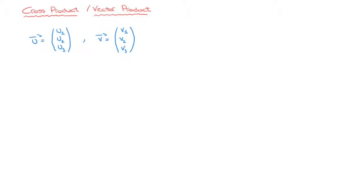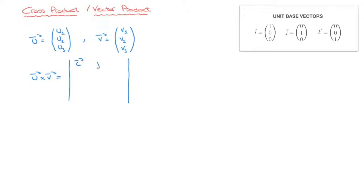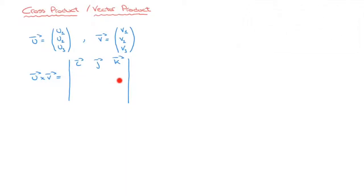The cross-product of U and V is equal to the determinant — written between two vertical lines — of a 3x3 matrix, so that's a matrix with three rows as well as three columns, whose top row is made of the three unit base vectors: I, J, and K. The second row of the matrix is made of the components of the first vector in the product, so in this case that's vector U, whose components are U1, U2, and U3.